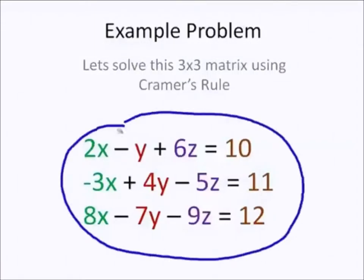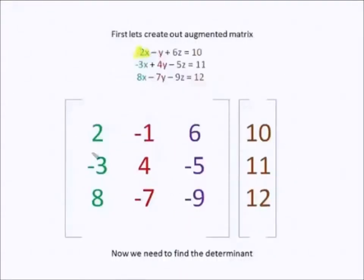Let's say we have these equations and we want to find out what the variables are. One way we can do this is using Cramer's rule. Firstly, we take the coefficients from the equation and create an augmented matrix.